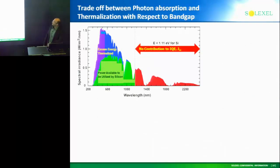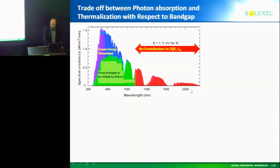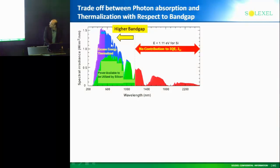This is the spectrum I was talking about. You can see that silicon is at the dashed line. The red portion is lower energy than the bandgap of silicon — it doesn't get absorbed. That's one of the inefficiencies. The second inefficiency is that all this excess energy — the blue portion — is thermalized right away. If you were to move to a higher bandgap like gallium arsenide, you would reduce the amount of excess energy thermalized, but you would incur more losses by not absorbing the longer-wavelength photons.